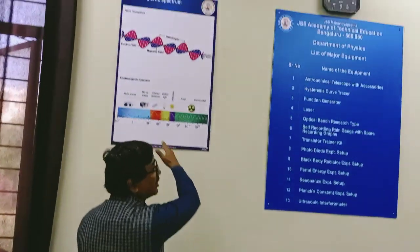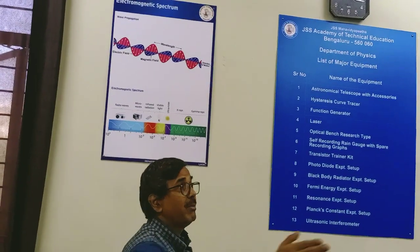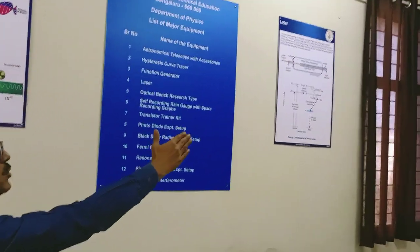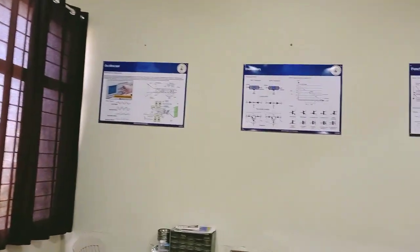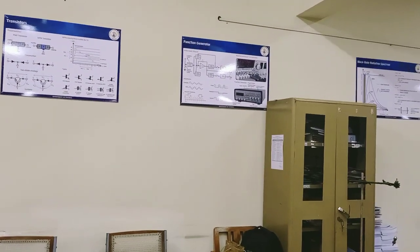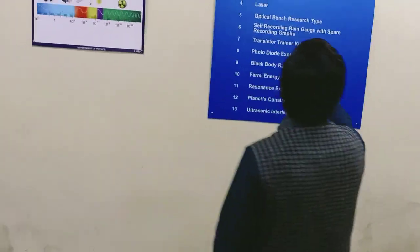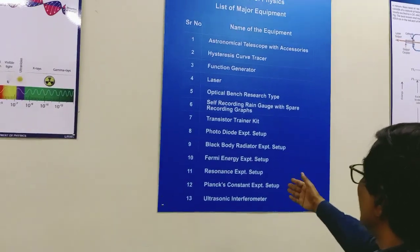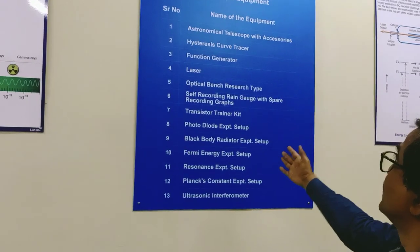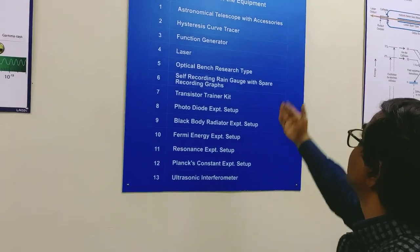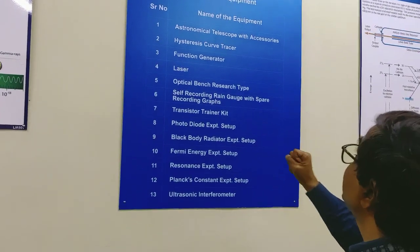Now here we have some charts on the walls. As you can see, the full lab is filled with charts based on almost all the experiments. As I move through the lab I will show you all those charts. Here are the major equipment that we have in the lab - you can pause the video to read the full list of major equipment.